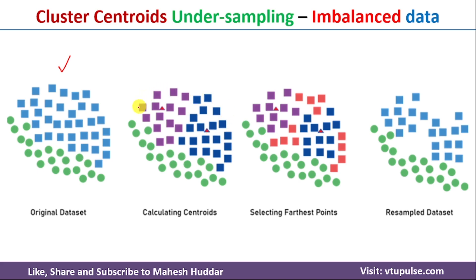From each cluster we identify the farthest points from the centroid. For the first cluster, the data points that are far away from the centroid will be removed. The same is done for the second cluster — the far-away points from that centroid are also removed. The points shown in red color are the ones far away from these two centroids and will be removed.